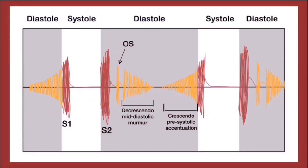Here we have the auscultation diagram. Going to the beginning of the diastole, we have the S2 caused by the closure of the sigmoid valves in red, which is closely followed by the opening snap in yellow, produced by the forceful opening of the narrow mitral valve. Afterwards, also in yellow, there is first a mid-diastolic decrescendo murmur caused by the passive passage of blood into the ventricle, followed by the crescendo pre-systolic accentuation produced by the atrial contraction. Finally, before the systole begins, we have in red the S1, signaling the closure of the atrioventricular valves.